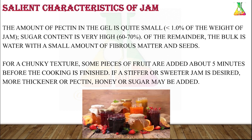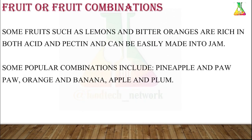Some salient characteristics of jam: the amount of pectin in the gel is quite small, and the sugar content is very high — more sugar means a more sticky, thick consistency. For a crunchy and chunky taste, some fruit pieces are added just five minutes before the end of cooking, so they maintain a stiffer texture and sweeter taste.